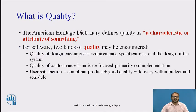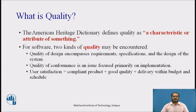The American Heritage Dictionary defines quality as a characteristic or attribute of something. For software, there are two kinds of quality that may be encountered. Quality of design encompasses requirements, specifications and the design of a system. Quality of confirmation is an issue focused primarily on implementation and user satisfaction.